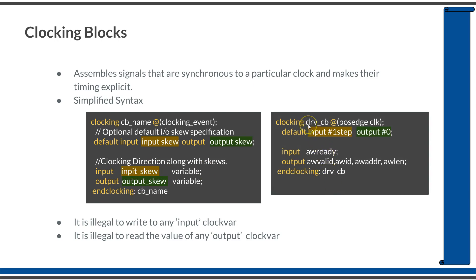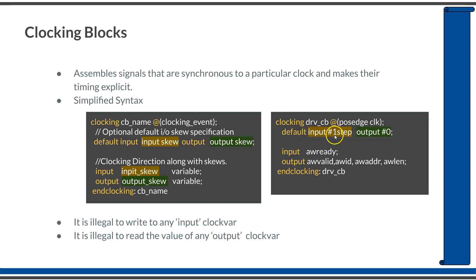I have defined a clocking block with name DRV_CB, which is a driver clocking block. It is sensitive to the positive edge of clock, so the positive edge of the CLK signal is the synchronization event for this clocking block. In this example, instead of defining individual skews I have defined the default skew for all inputs and outputs — default input skew as 'input #1step' and output as '#0'. We will see the meaning of '#1step' and '#0' in the next slide.